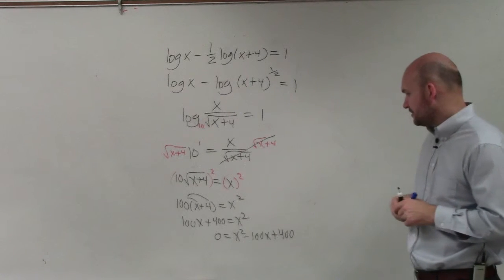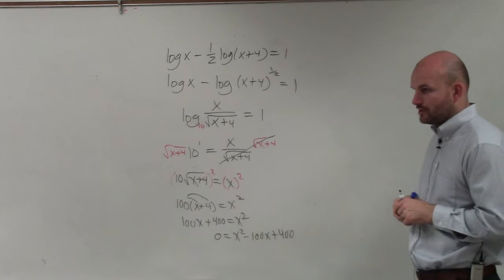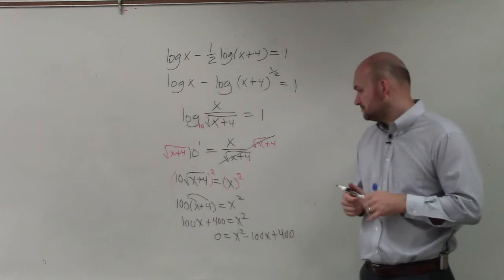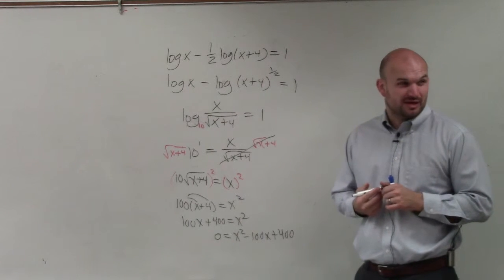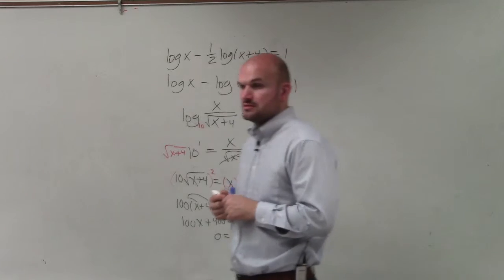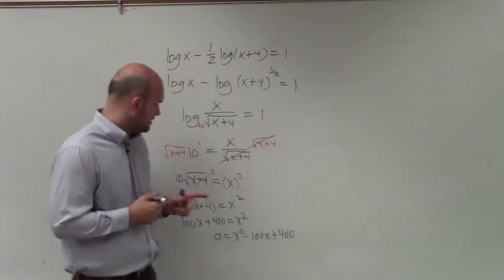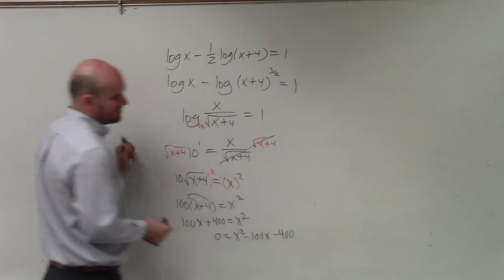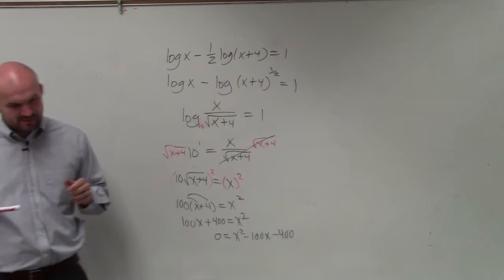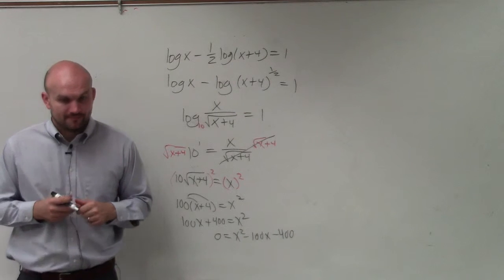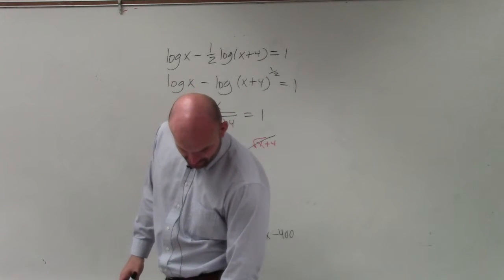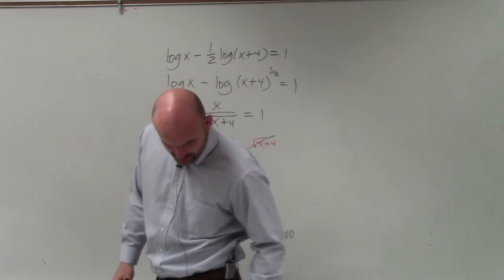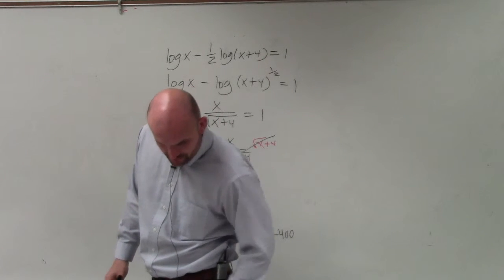And then I just needed to be able to determine, well, is there any two numbers that multiply to give you 400 that add to give you negative 100? It would be negative 400. You are absolutely correct. Thank you. But that doesn't really help. So if we can't solve a quadratic by factoring, then we can always look into doing what? Quadratic formula.